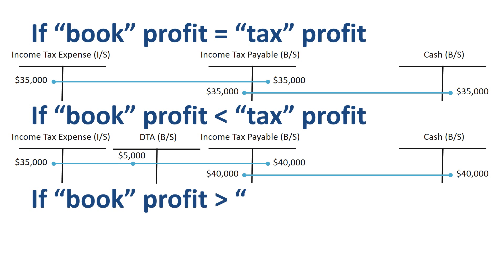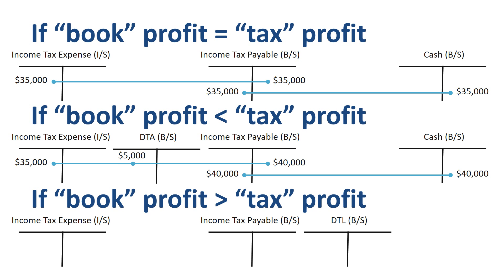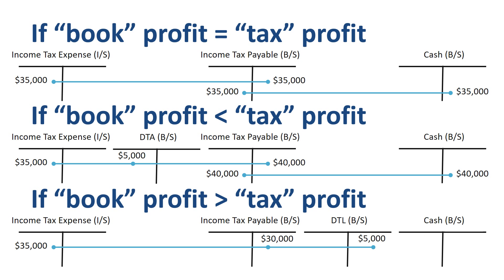If book profit is higher than tax profit, then income tax expense for book financial accounting purposes will be higher than income tax expense for tax accounting purposes. To correctly prepare your US GAAP or IFRS financial statements, you need to introduce a deferred tax liability for the difference.